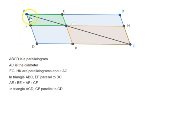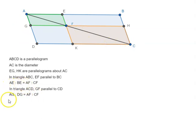Similarly, in triangle ACD on this side of the diameter, again GF is parallel to BC. So again, that means AG is to BG as AF is to FC. So here if you notice, AE is to BE and AG is to BG — both are proportional to AF is to CF. So that means AE is to BE is equal to AG is to BG.